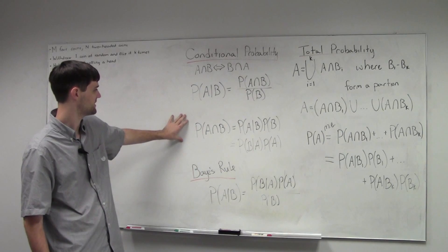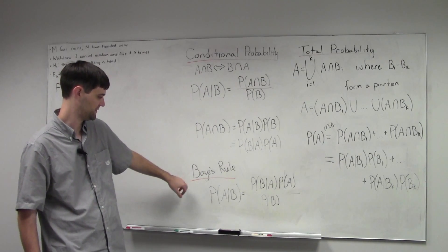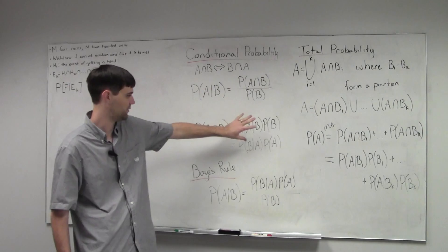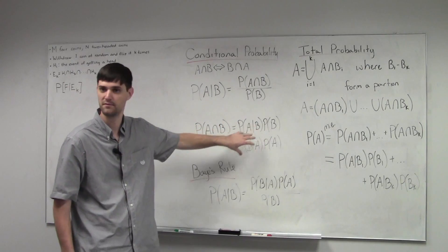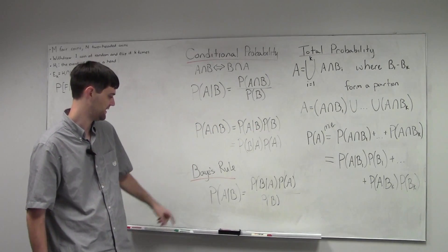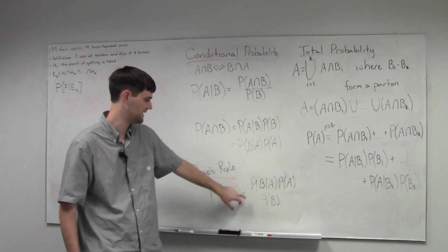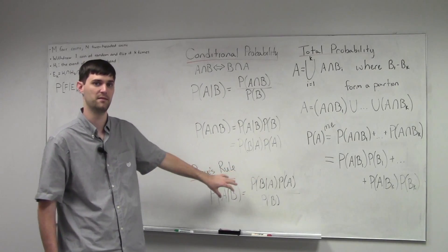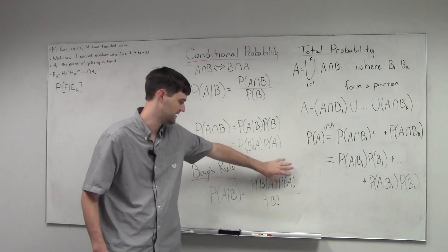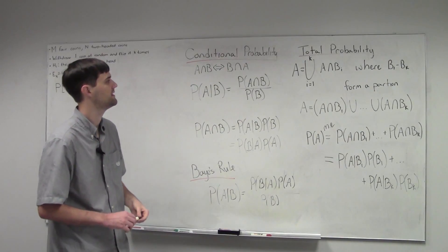So the probability of A given B times the probability of B equals B given A times the probability of A. This is going to be important in deriving Bayes' rule. Bayes' rule is simply equating these two terms and then solving for the probability of A given B in terms of the probability of B given A and the probabilities of the separate events.